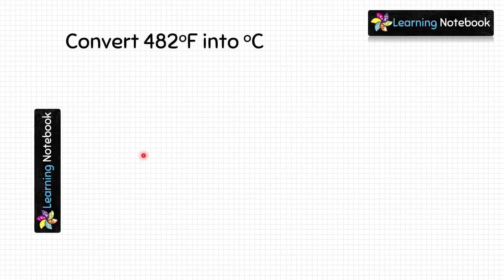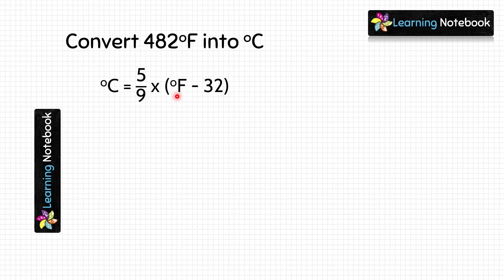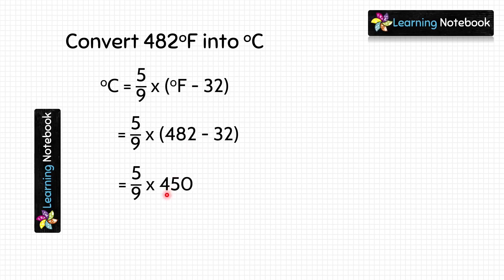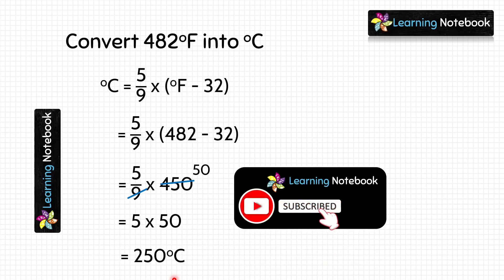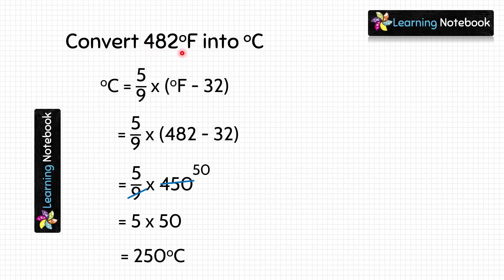Next question: convert 482 degree Fahrenheit into Celsius. Using the formula: 5/9 × (482 − 32). Doing the subtraction: 482 minus 32 equals 450. So we get 5/9 × 450, which simplifies to 5 × 50 equals 250. The answer is 250 degree Celsius. This means 482 degree Fahrenheit equals 250 degree Celsius.